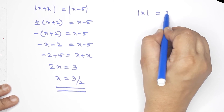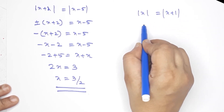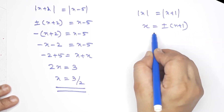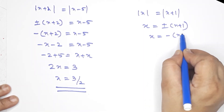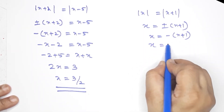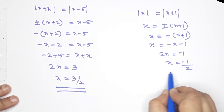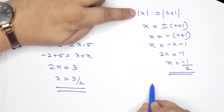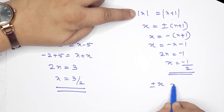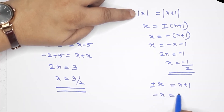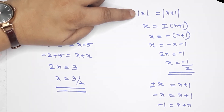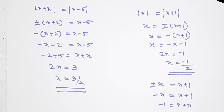Now: modulus of x equals x plus 1. So x equals plus or minus of x plus 1. Plus condition: x equals x plus 1 has no solution. Minus condition: minus x equals x plus 1, so minus 1 equals x plus x, giving 2x equals negative 1, x equals negative 1 by 2. If you are equal to one side, you can expand it. So x equals negative 1 by 2 is the answer.